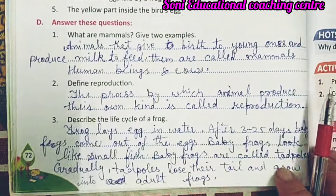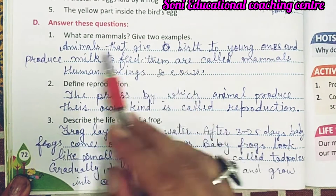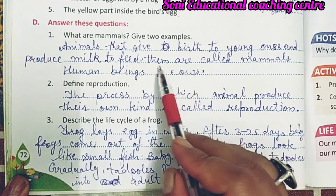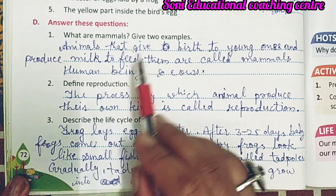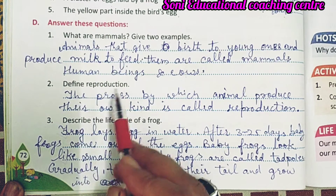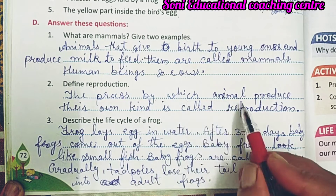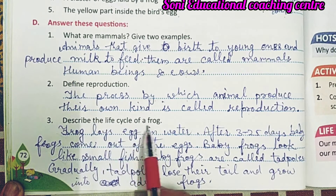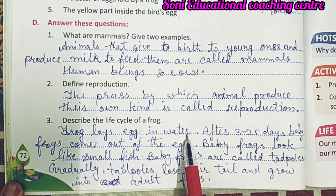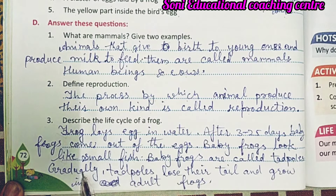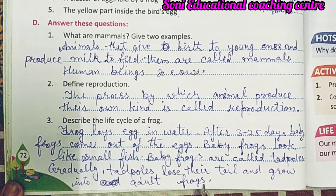Answer the following questions. What are mammals? Animals that give birth to young ones and produce milk to feed them are called mammals — examples: human beings and cows. Define reproduction: the process by which animals produce their own kind is called reproduction. Describe the life cycle of a frog: a frog lays eggs in water; after three to twenty-five days, baby frogs come out; they look like small fish and are called tadpoles; gradually tadpoles lose their tail and grow into adult frogs.